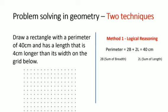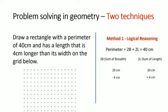It is good practice when dealing with unequal sharing to start off assuming they are shared equally. So if 40 centimeters are shared equally between the length and the breadth, then each will have 20 centimeters. Now let us subtract the 4 centimeters from the breadth. If I subtract 4 centimeters from the breadth, then I need to add 4 centimeters to the length in order to maintain the perimeter of 40 centimeters.